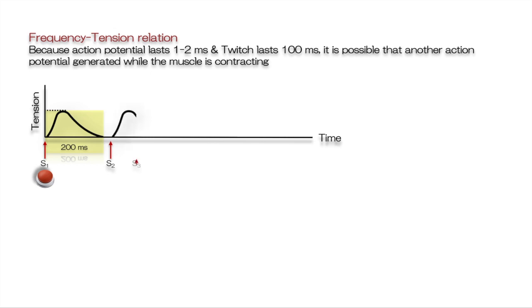In the next contraction, the second stimulus is given during relaxation. As you see, even if two individual stimuli are the same, the contraction produced during the second response is added to the residual contraction from the first one and produces a greater tension in muscle.